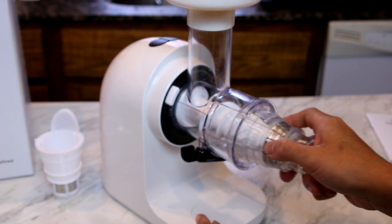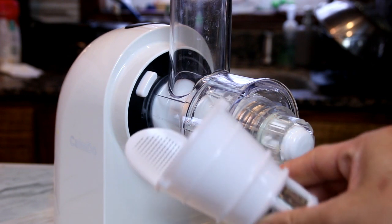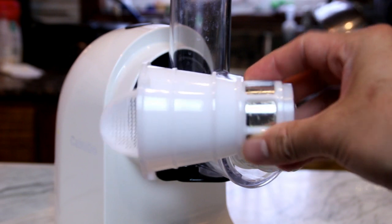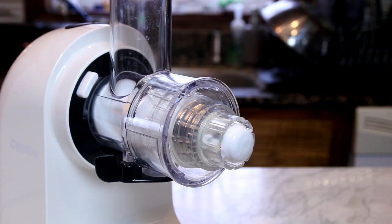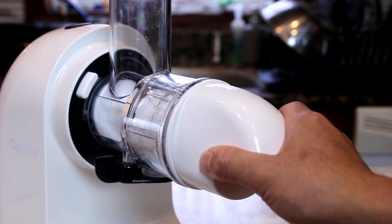Then the filter over that. I should mention too, it comes with two filters, one with a screen. So if you want some pulp, you can use that one, but I like this other one. And then insert the sludge outlet into the grooves and give it a twist.